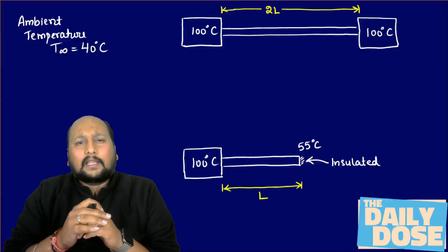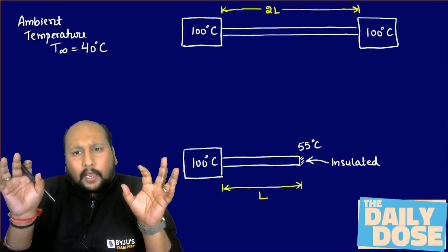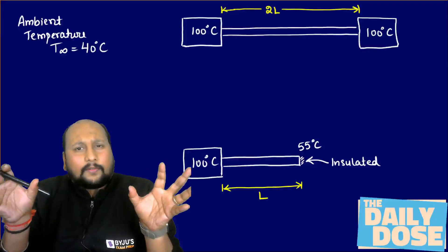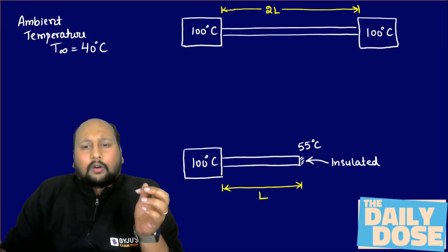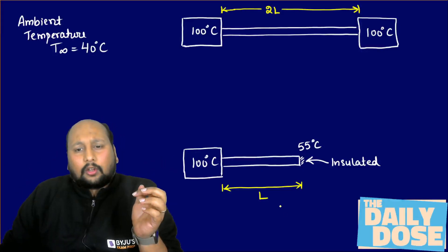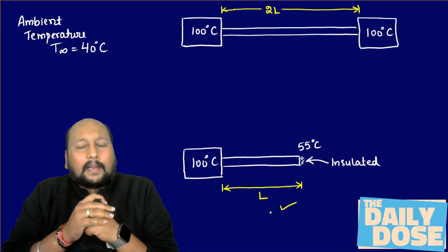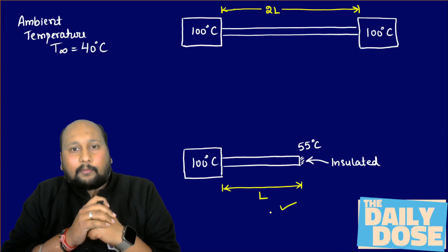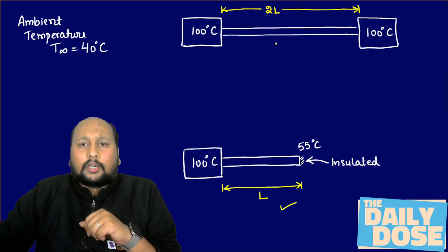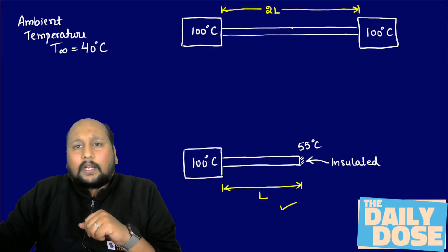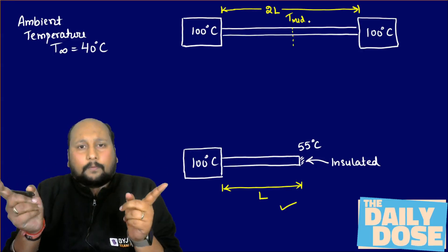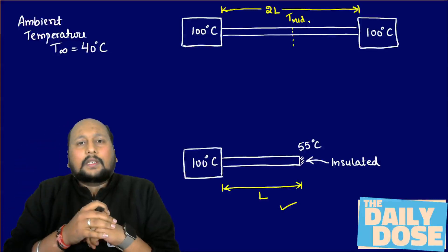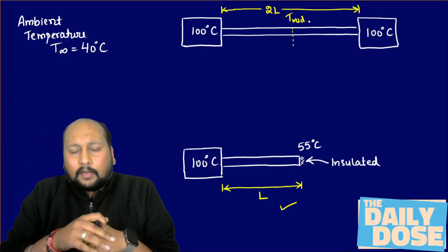The question asks: what is the temperature at the midpoint of the longer rod? The longer rod has 100°C at both ends. The shorter rod has length L, an insulated tip at the free end with a temperature of 55°C. Both rods share the same ambient condition.